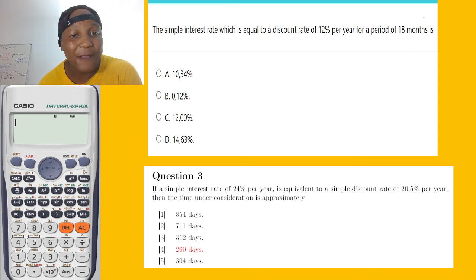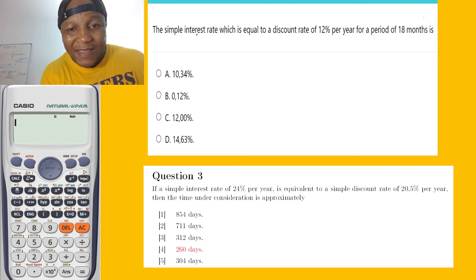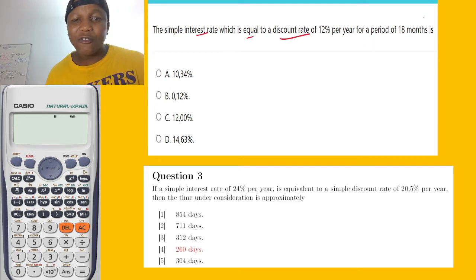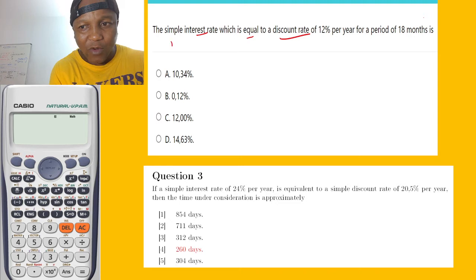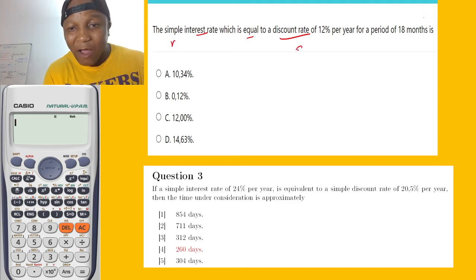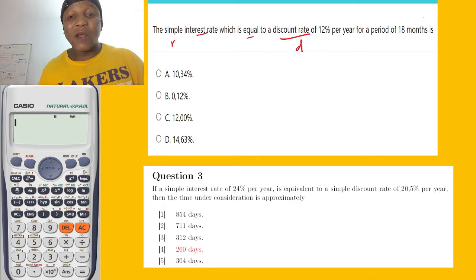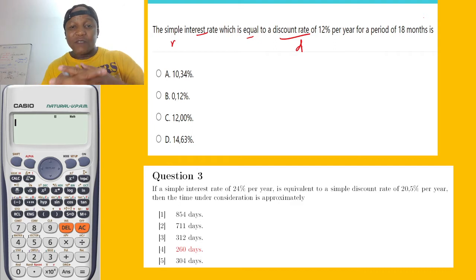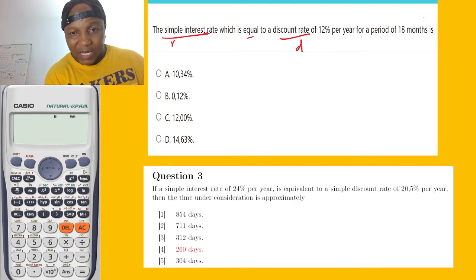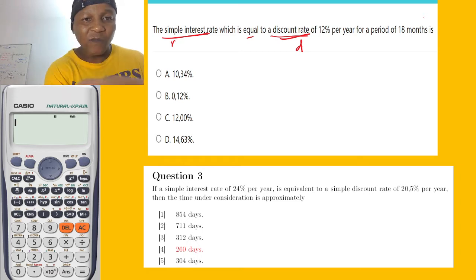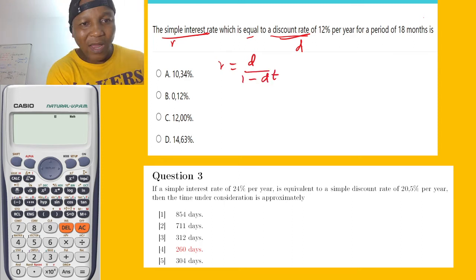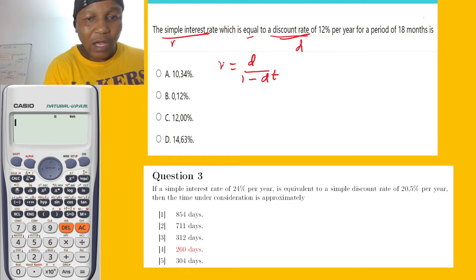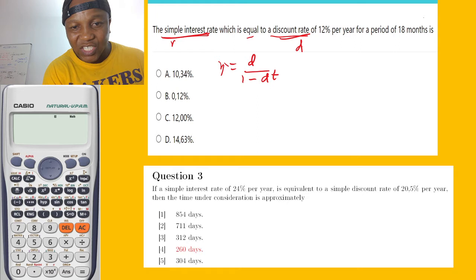Now with our father, let's get started. So we have a question right here. These are very easy. The simple interest rate is equal to the discount rate. We have two types of rates: discount rates and simple interest. Simple interest we represent using letter I, or sometimes R. Discount rate we represent using letter D. There is a formula which involves the relationship between simple interest rate and discount rate.